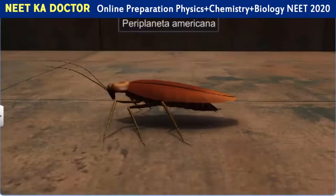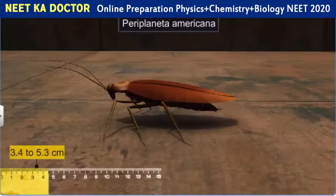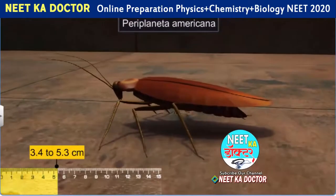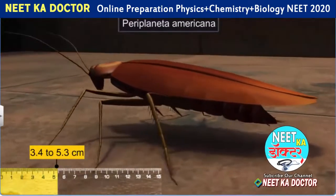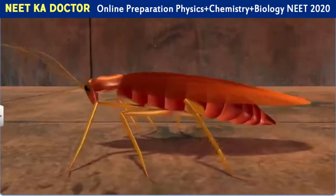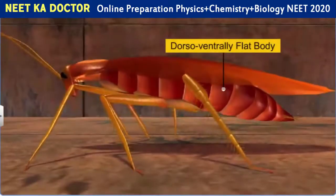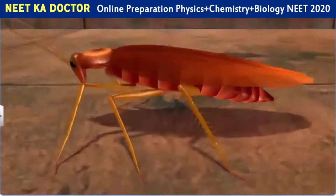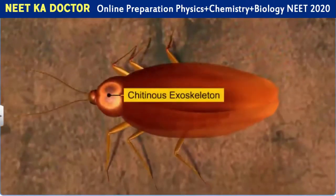Periplaneta americana measures 3.4 to 5.3 cm in length. The adult male of this species has wings extending beyond its abdomen. The body of a cockroach is dorso-ventrally flattened and is covered in a hard, brown, chitinous exoskeleton.